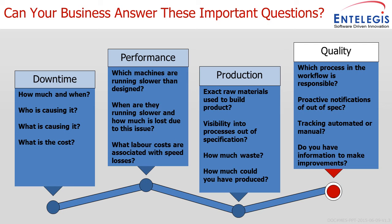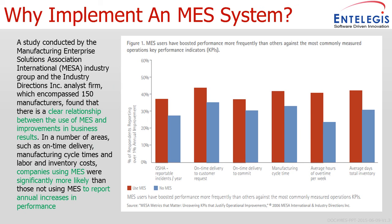Do you have manually audited or tracked data, or is it automated? Do you have enough information to provide a methodology to make improvements on the line? A study was conducted by MESA including 150 manufacturers, and they found a clear relationship between the use of MES and improvements in business results. Companies using MES were significantly more likely to report annual increases in performance, and from this chart we can see significant improvement across various areas of manufacturing compared to those without an MES system.